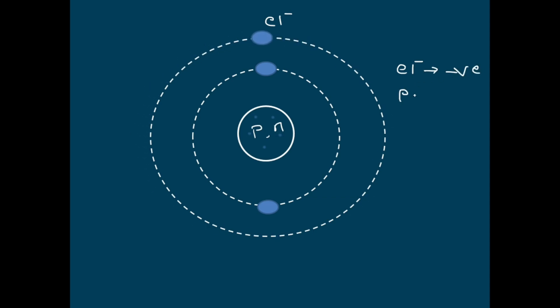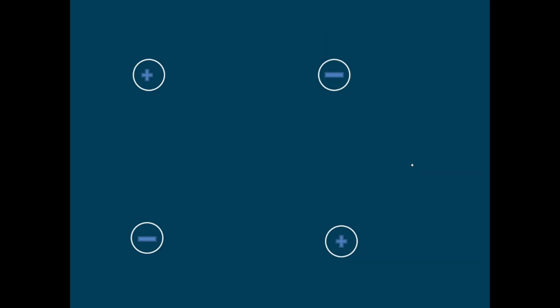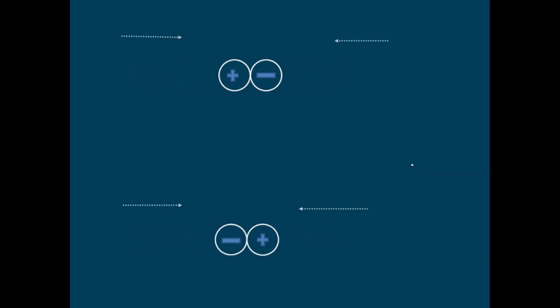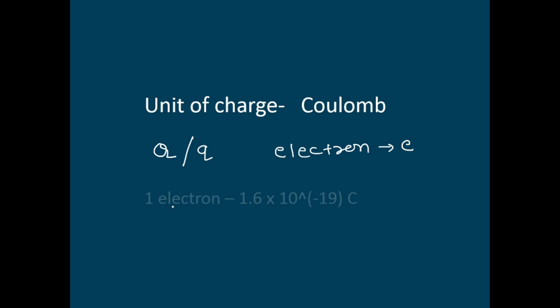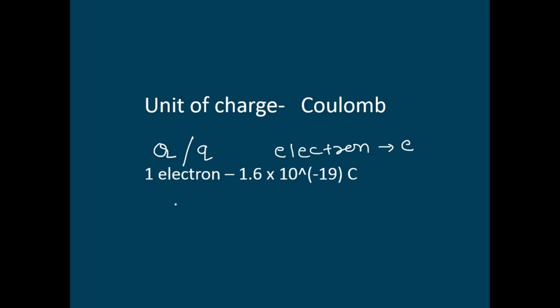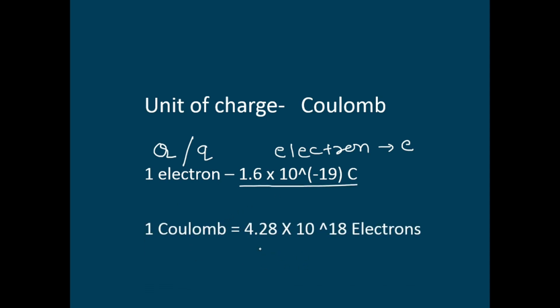These outermost electrons contribute to the flow of current. An electron possesses a negative charge, a proton has a positive charge, and neutrons have no charge — they are electrically neutral. Same polarity charges tend to move away from each other, while opposite polarity charges tend to move towards each other. The unit of charge is a coulomb, denoted by symbol Q or q. One electron has a charge of 1.6 × 10⁻¹⁹ coulombs, so to have 1 coulomb of charge we require 6.28 × 10¹⁸ electrons.